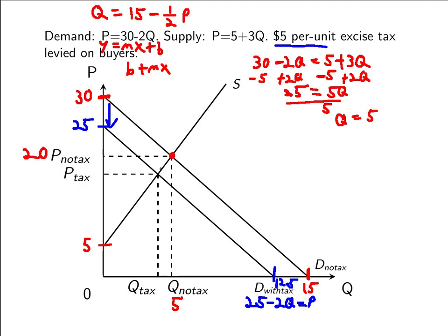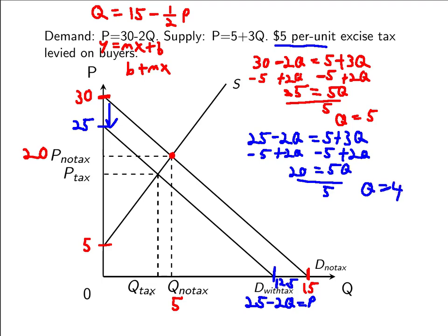So now, if you want to find what's the new p and q with the tax, you just have to set 25 minus 2q equal to 5 plus 3q. Because we have the same supply curve. Once again, I'm going to add 2q to both sides. I'm going to subtract 5 from both sides. And we get 20 equals 5q. We divide by 5, and we get q equals 4. So now we have q with the tax is 4. And then we can just plug that 4 back in. So 5 plus 3 times 4 is 17. So now, we know that the price the sellers are going to keep is 17.